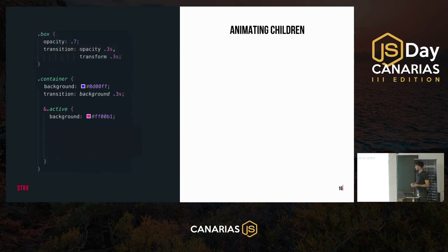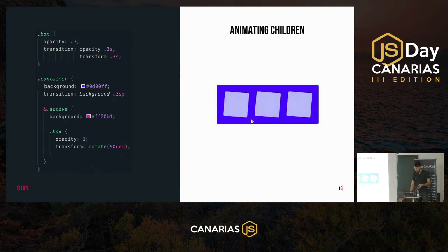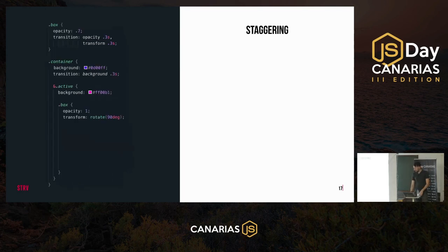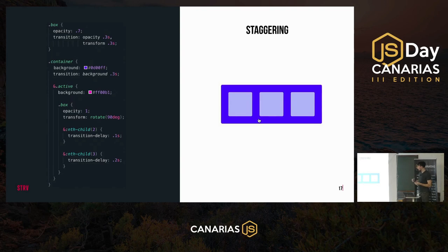We can make things more interesting and propagate the animation down to child elements. We define the same transition property for the box elements inside the container, and when a box is inside the active container we change its opacity and rotate it 90 degrees. We can make this even more interesting by adding staggered animation, using pseudo-class selectors like nth-child to add transition-delay to the second and third boxes.